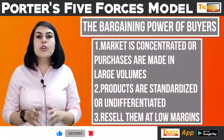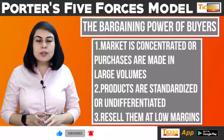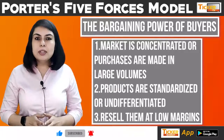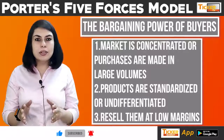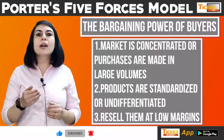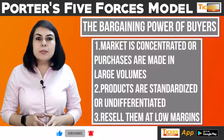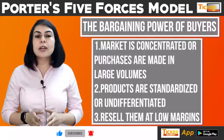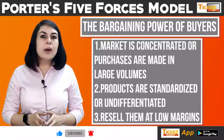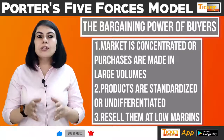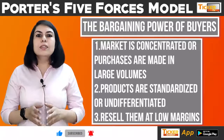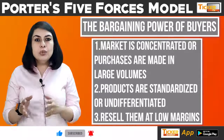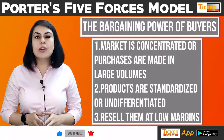1. The market is concentrated or purchases are made in large volumes. 2. The company offers products that are standardized or undifferentiated — for example, in the paper industry, most manufacturers create standardized products, so buyers can force a manufacturer to sell at market price. 3. Some companies purchase products from other companies and sell at a lower margin, so they can push prices lower. One can assess the bargaining power of buyers by looking at the concentration of buyers, volume of transactions, and sensitivity of customers. This can help you understand how the profits of the company you are looking to invest in can be impacted in the long term.